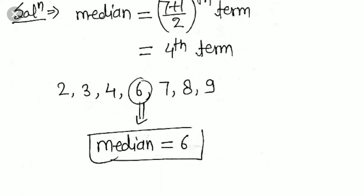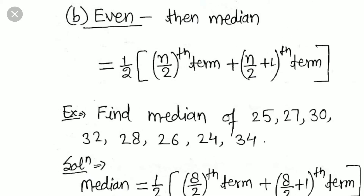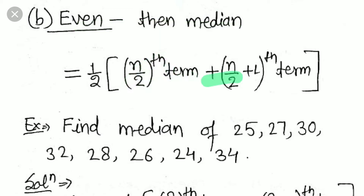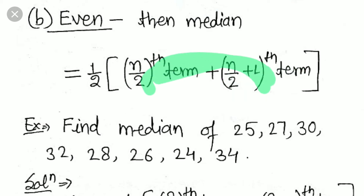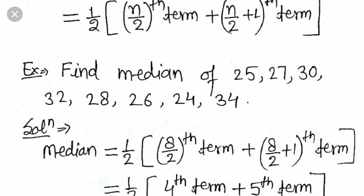When the number of terms is even, the formula to find the median involves two middle terms: the (n/2) th term and the (n/2 + 1) th term. We take the sum of both terms and half of that sum will be the median.